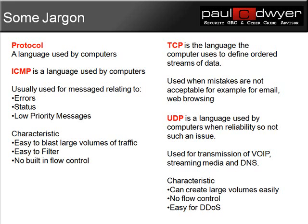The characteristics of ICMP are that it's easy to blast large volumes of traffic, it's also easy to filter, but there's no built-in flow control. TCP is the language computers use to define ordered streams of data for things that are quite important — it's used when mistakes are not acceptable, for example for email or web browsing. UDP on the other hand is a language used by computers when reliability is not such an issue, for example in the transmission of Voice over IP, streaming media, video, or even DNS queries. The characteristics of UDP include that you can also create large volumes easily, there's no flow control, and it's very easy to be used in a DDoS attack.